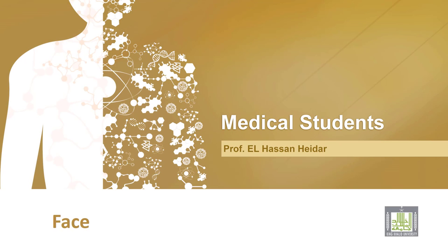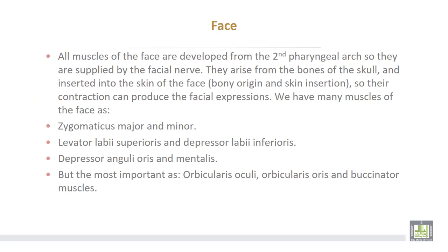The second pharyngeal arch and all muscles of the face are supplied from the facial nerve. They arise from the bones of the skull and insert in the skin of the face, so they have bone origin and skin insertion. Their contraction can produce facial expressions.